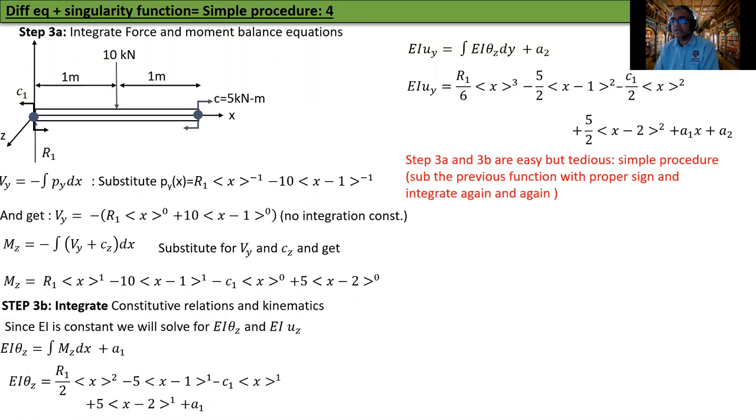Steps 3A and 3B are easy but tedious, a simple procedure. Substitute the previous function with proper sign and integrate again and again. The signs might be slightly different than what you're used to because I want to keep values determined by the global axis, so you don't have to think which way is positive or negative.